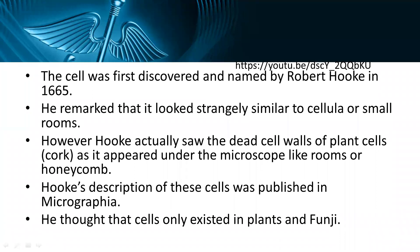The cell was first discovered and named by Robert Hooke in 1665. He remarked that it looked strangely similar to cellular or small rooms. Hooke actually saw the dead cell walls of plant cells from cork — he sliced some cork and placed it under a microscope which he made himself. It appeared under the microscope like rooms or a honeycomb. Hooke's description of these cells was published in Micrographia, which was at that time a research journal. He thought that cells only existed in plants and fungi.